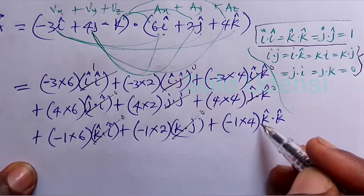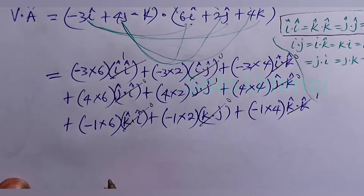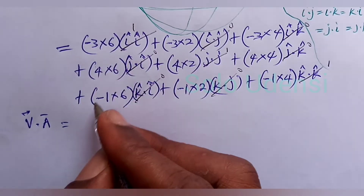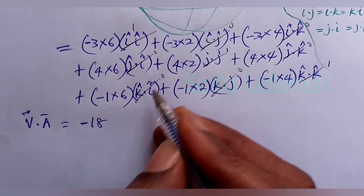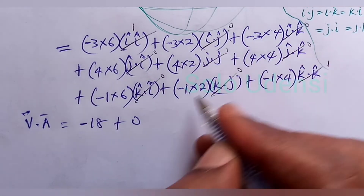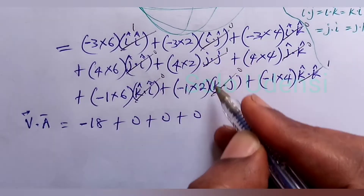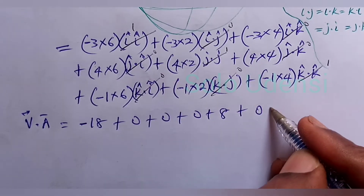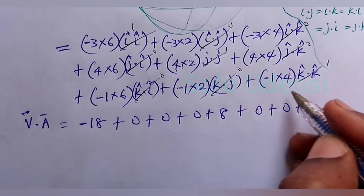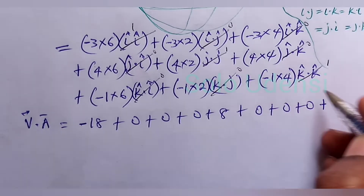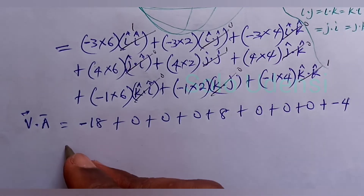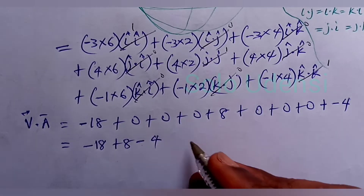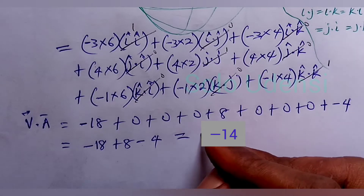So V dot A equals minus 18 plus 0 plus 0 plus 0 plus 8 plus 0, minus 4. We have minus 18 plus 8 minus 4, which equals minus 14.